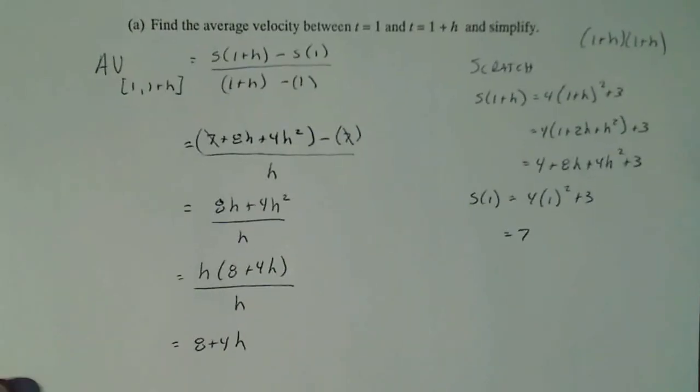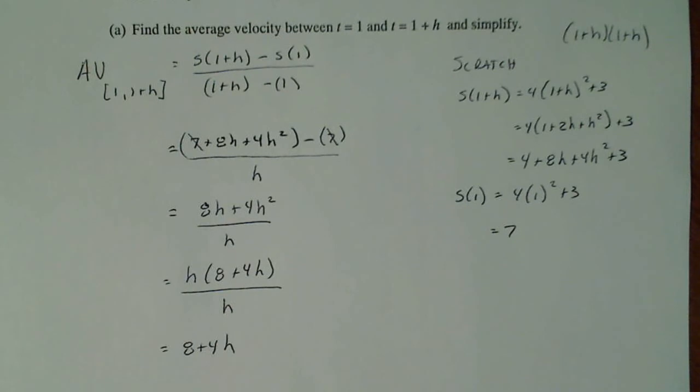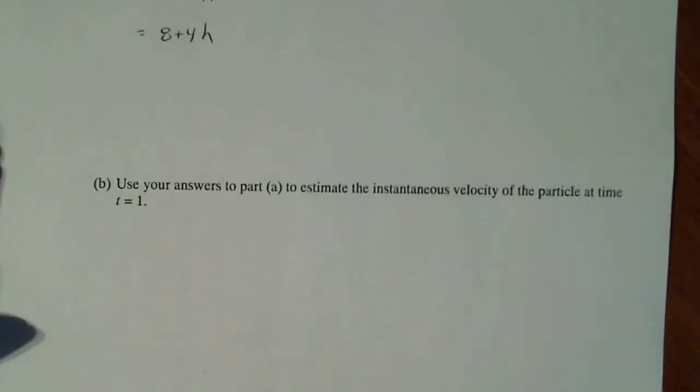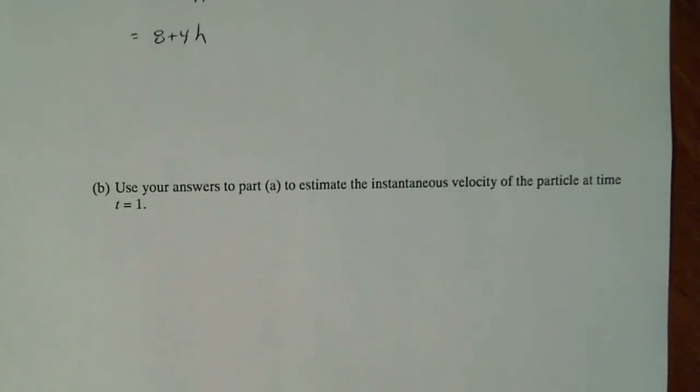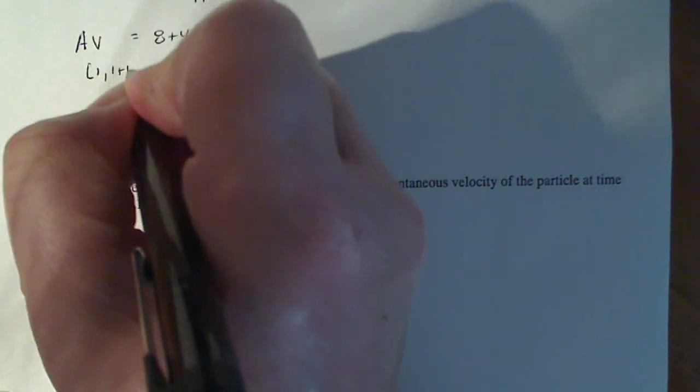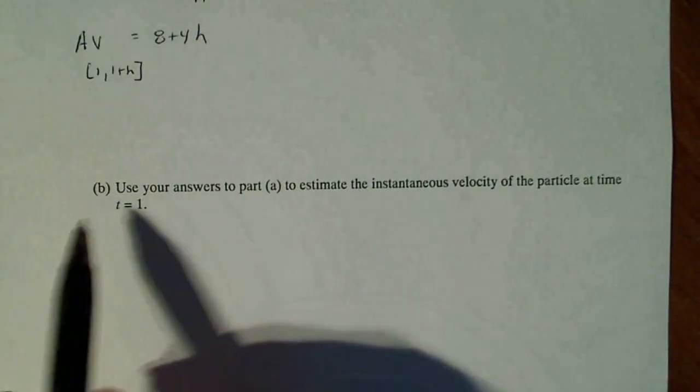There you go, 8 plus 4h because these guys cancel. Now, down at the bottom, it says I'm going to leave that right there, that the average velocity between 1 and 1 plus h is 8 plus 4h. Now use your answer to part a to estimate the instantaneous velocity of the particle at time t equal 1.